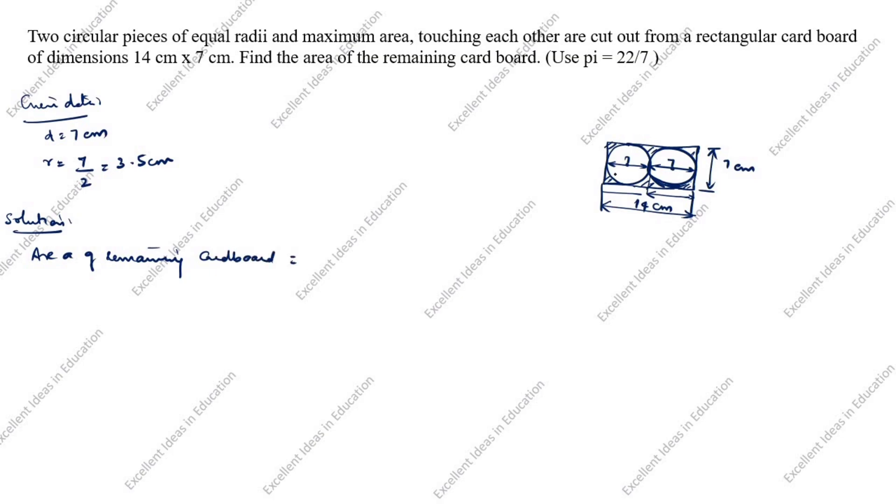You see in this drawing circle and rectangle is there. What is the area of rectangle formula? L into B. What is L? L is 14, B is 7. Multiply 14 into 7. 7 fours are 28 to 1, 7 sevens 9, so 98 centimeter square.